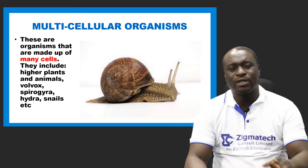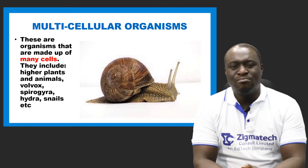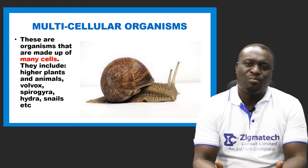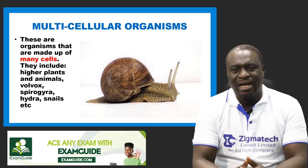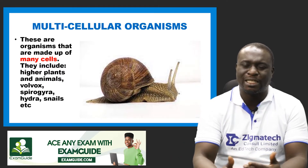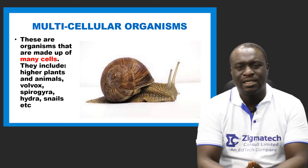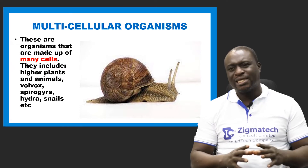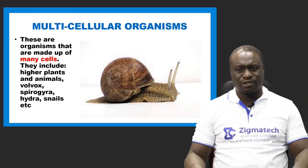Multicellular organisms are organisms made up of more than one cell — they are also called many-celled organisms. These cells aggregate together and perform a particular function as a tissue. Tissues aggregate to form organs, organs aggregate to form systems, and systems aggregate to form the body of an organism. Examples include higher plants and animals.